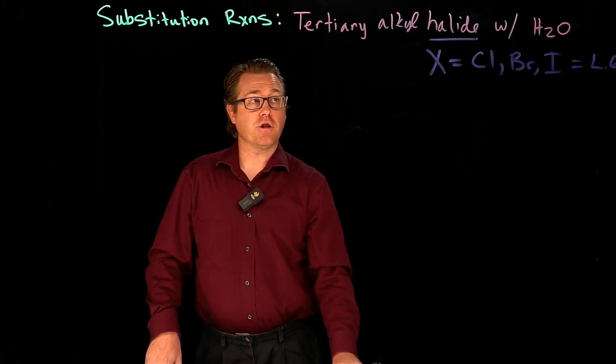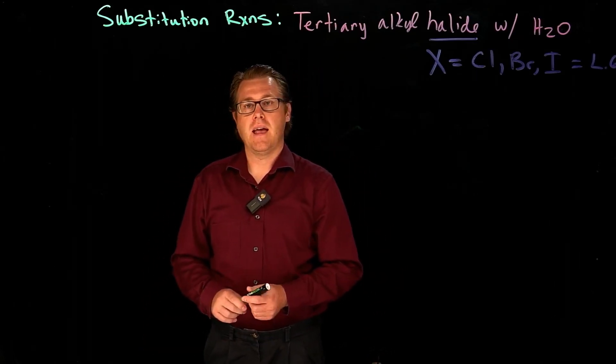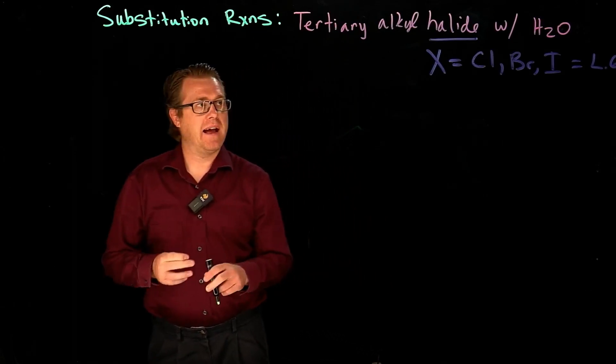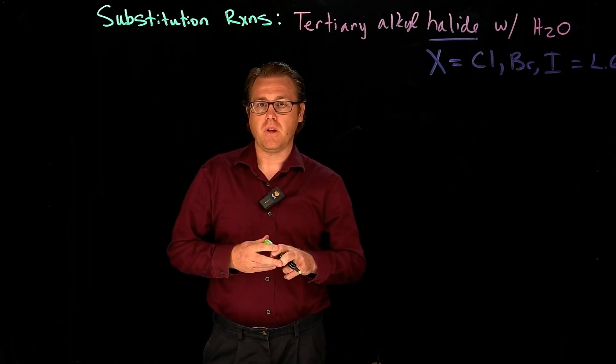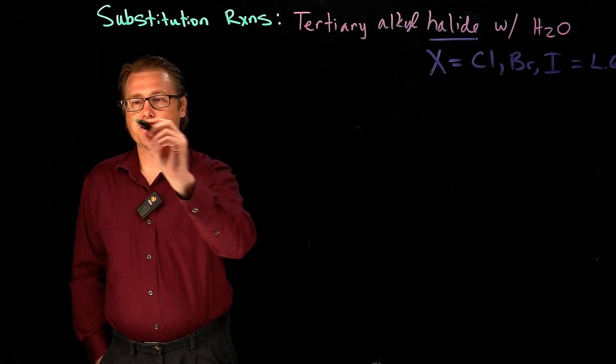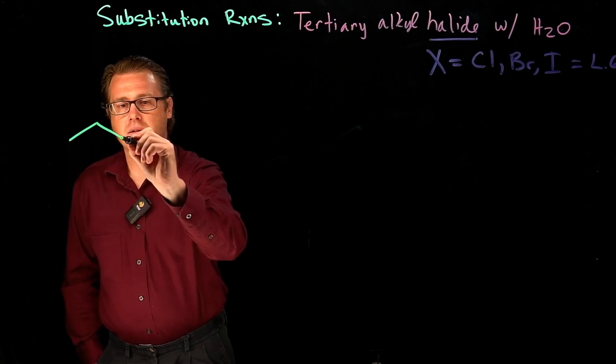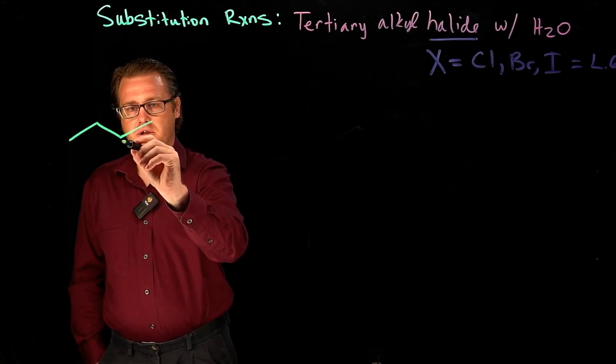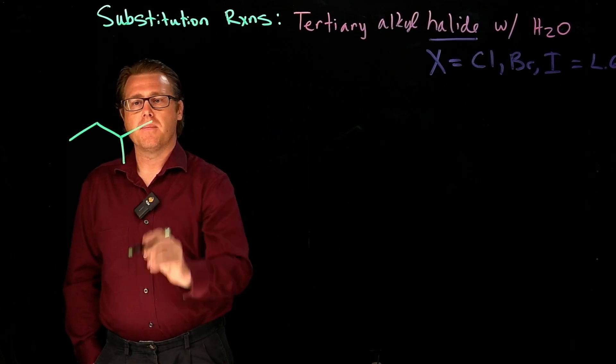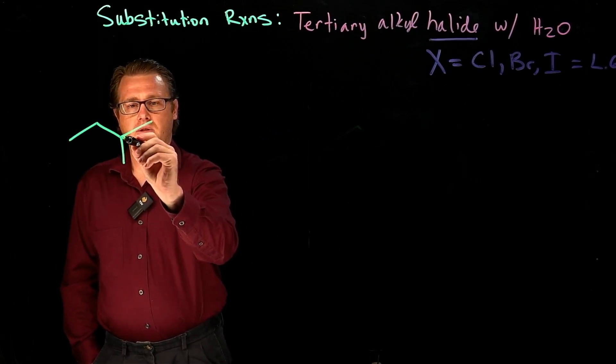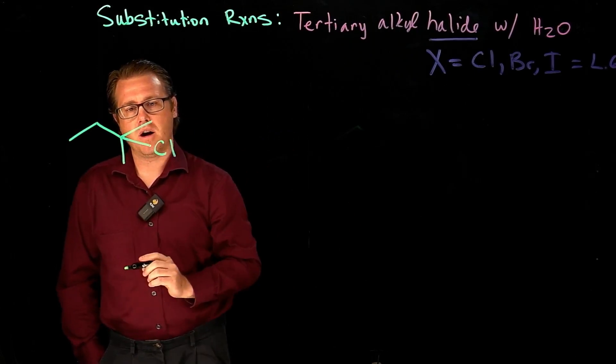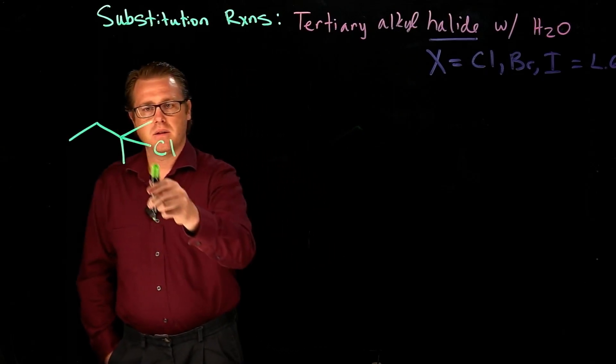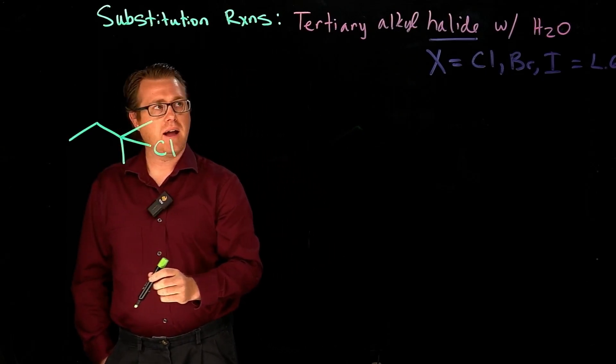Now let's take a tertiary alkyl halide and do a substitution reaction with water. So a tertiary alkyl halide, let's give ourselves a tertiary alkyl halide, and let's put on chlorine this time. So that is definitely a tertiary alkyl halide.